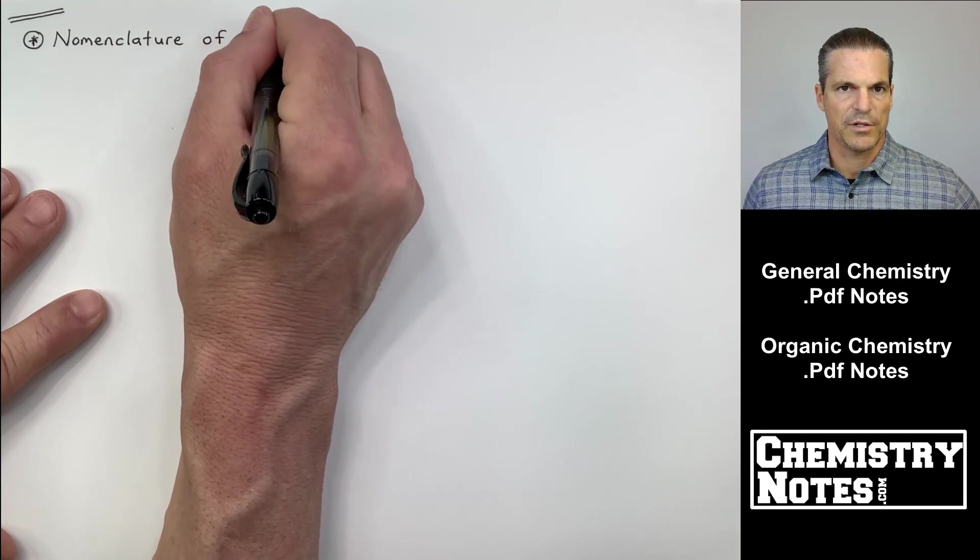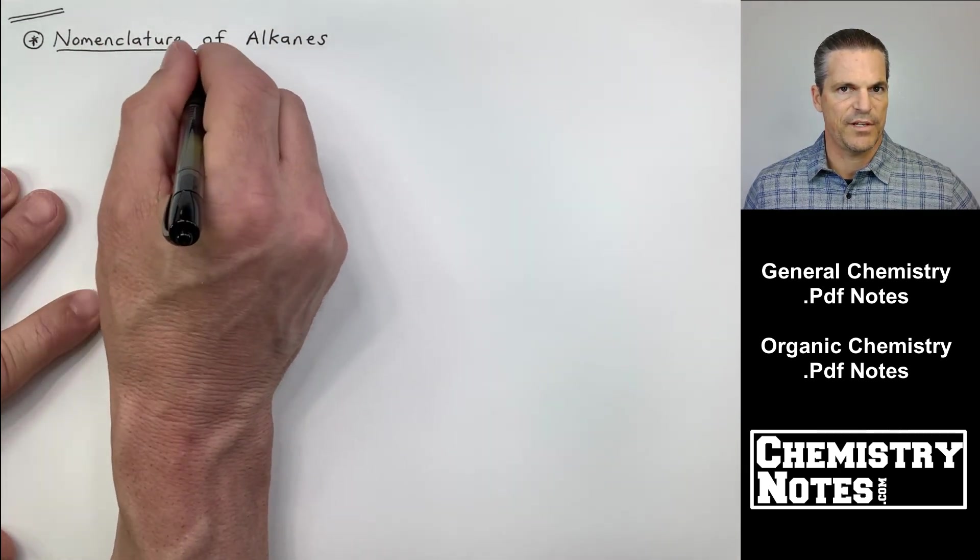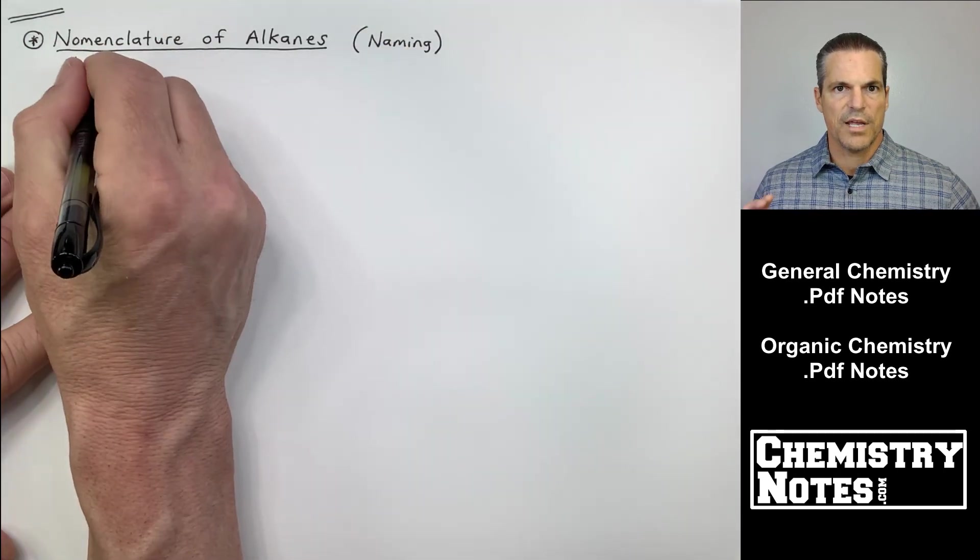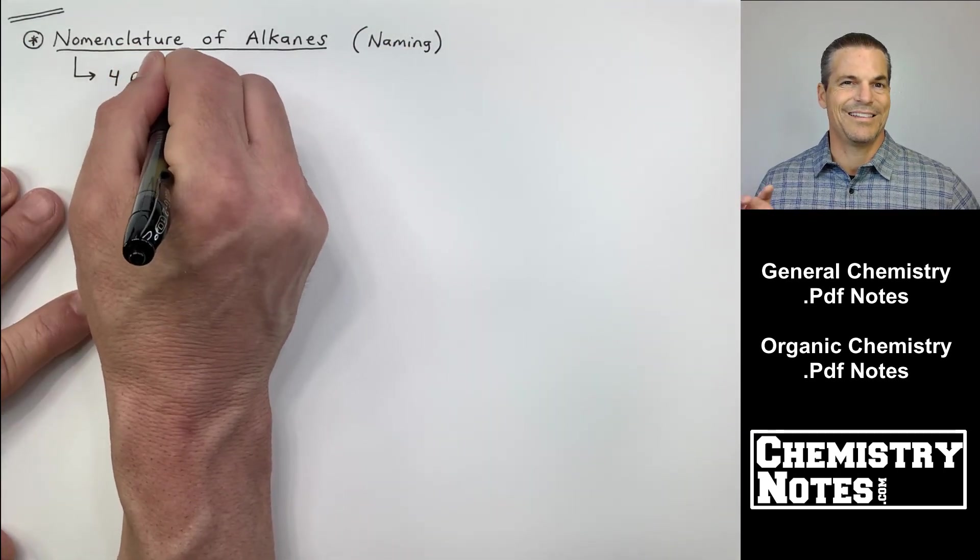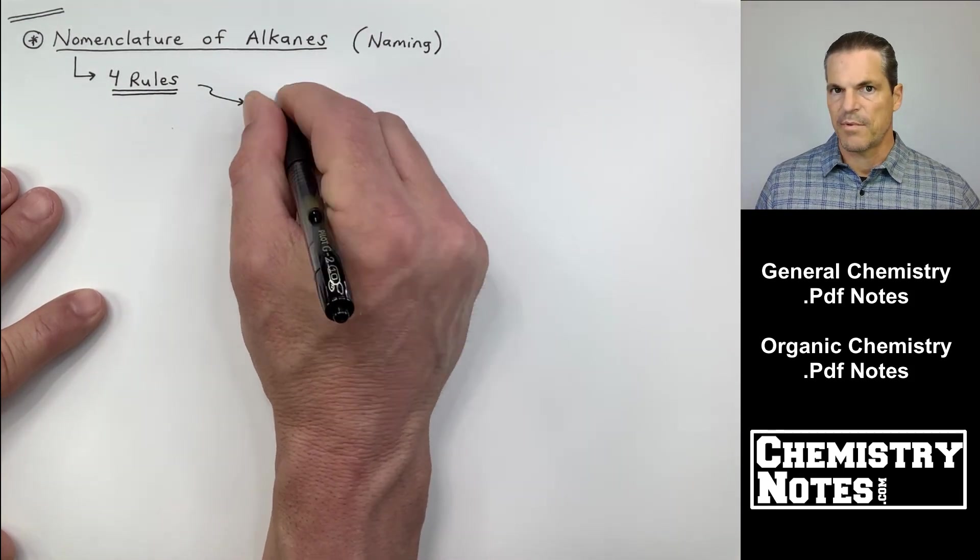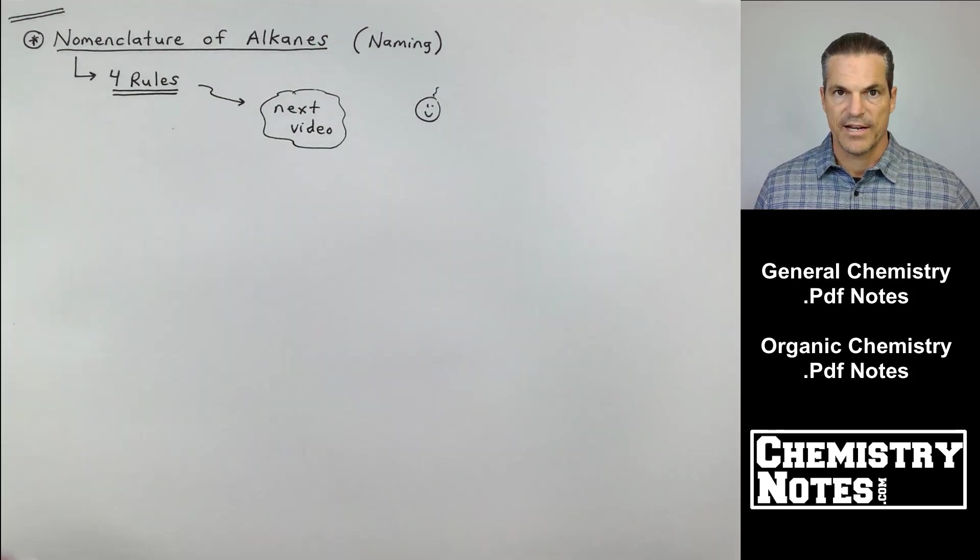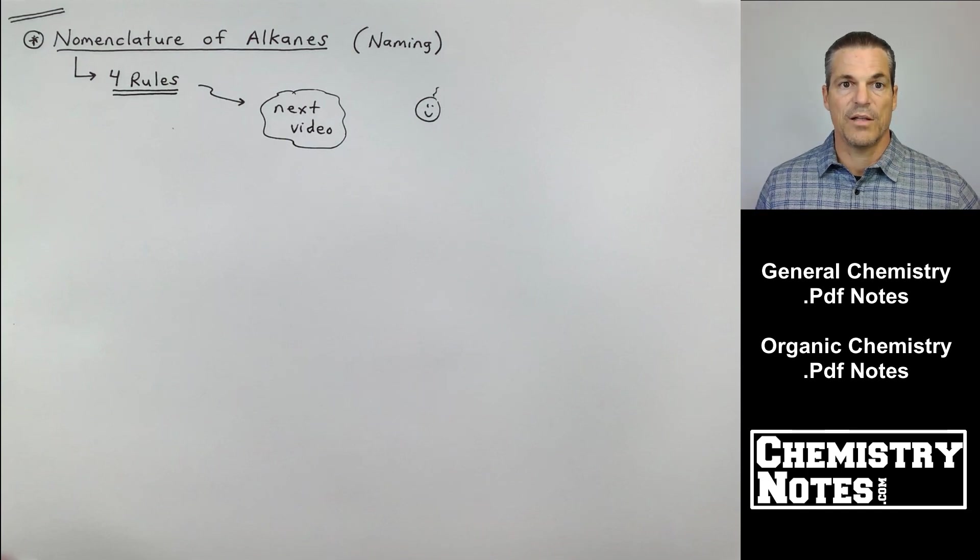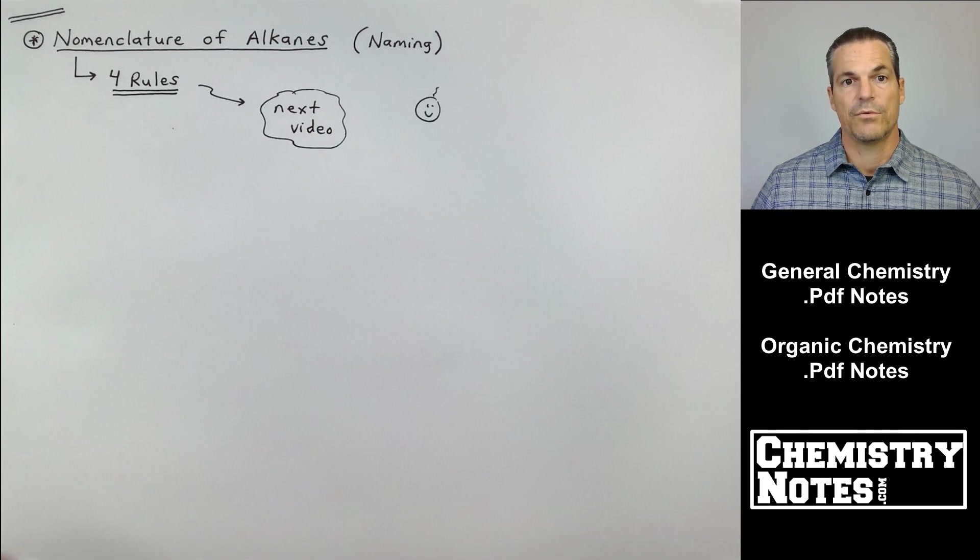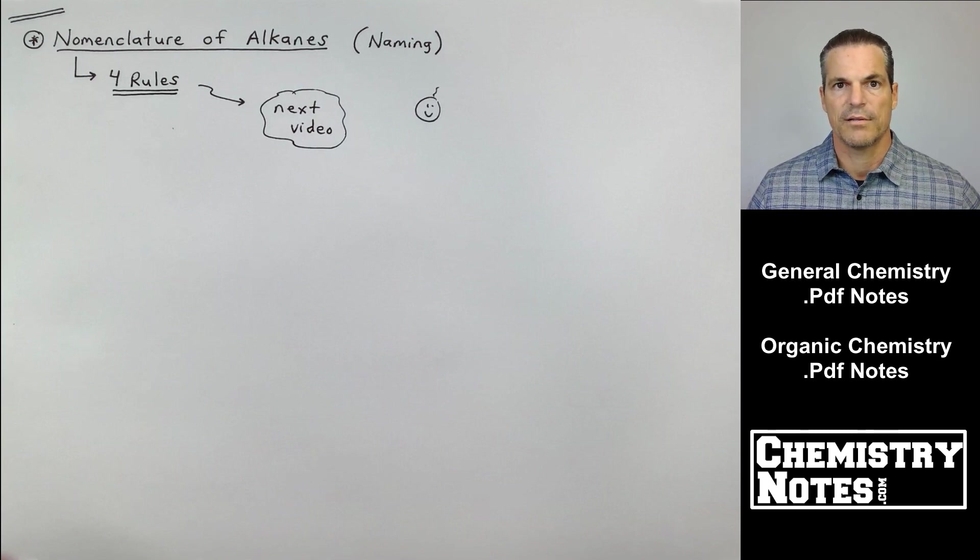Now I did mention that we were going to learn how to name alkanes in video number two. So that's very important. If you're taking general chemistry in the last chapter or the last section of your second semester general chem or the full course general chem is organic chemistry, you want to go ahead and watch video number one like we just did and then move on to video number two where nomenclature is important. There's four rules on how to name alkanes and we'll take care of that right now if you click over to the next video. I'll see you over there.